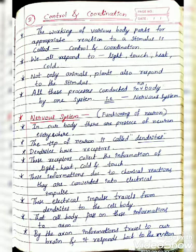We all respond to light, touch, heat and cold. Not only animals — plants also respond to the stimulus. All these processes are conducted in our body by one system, that is the nervous system.